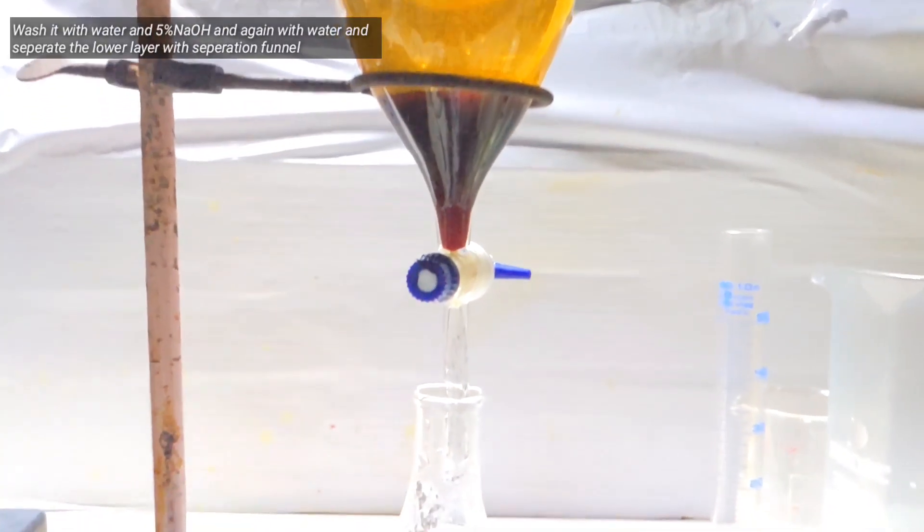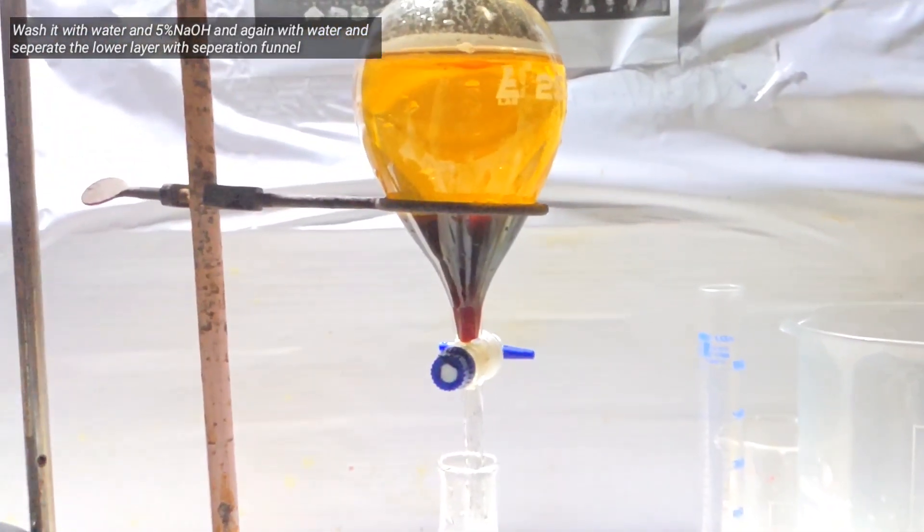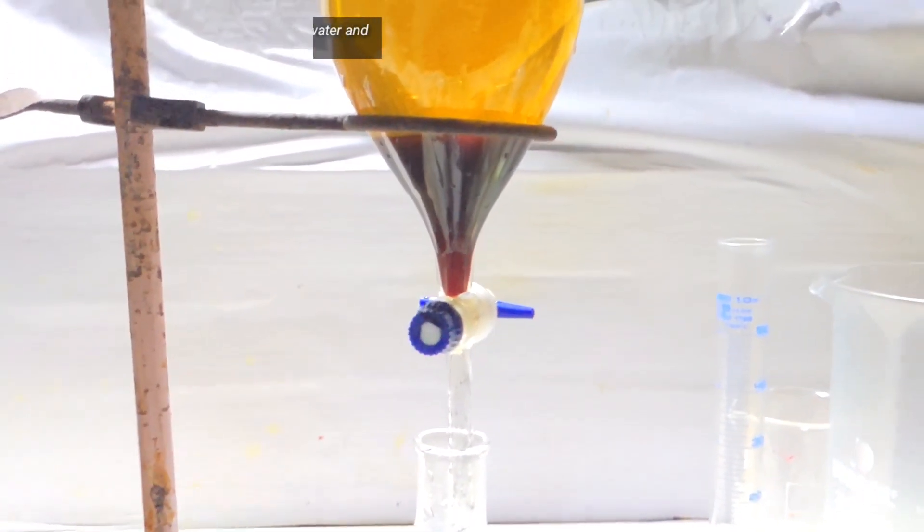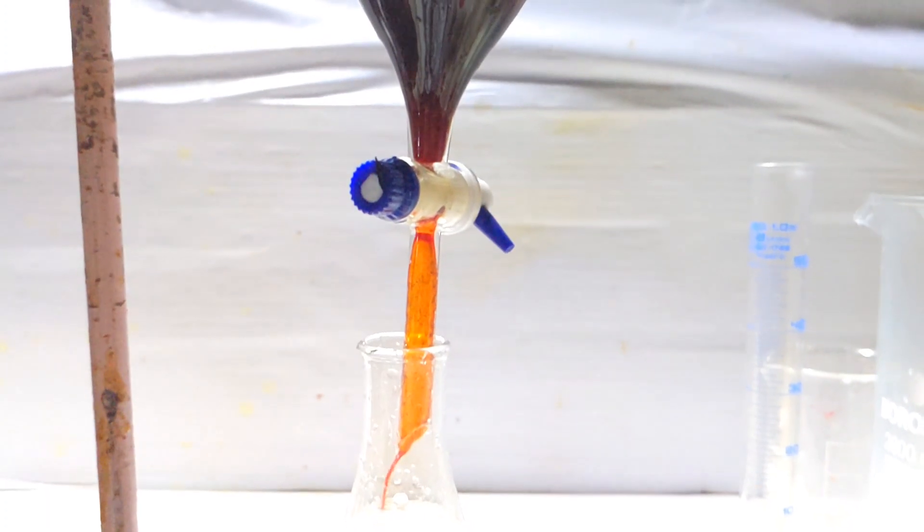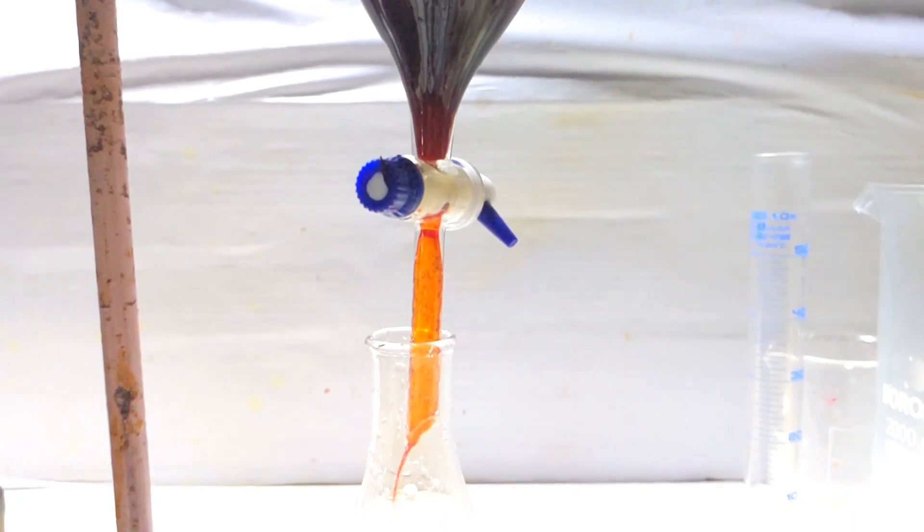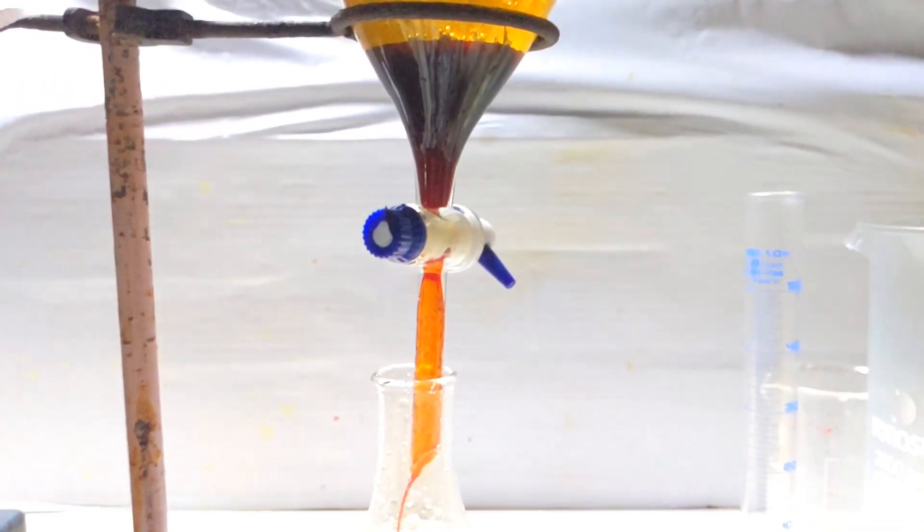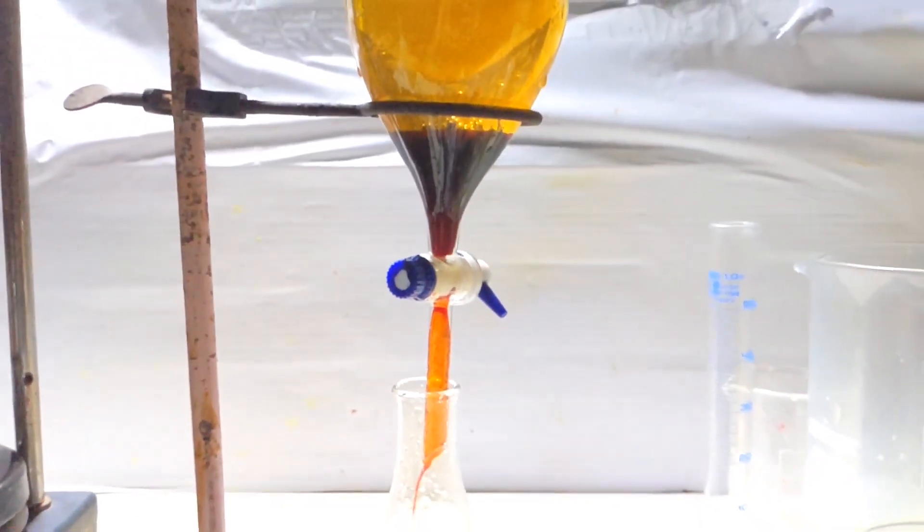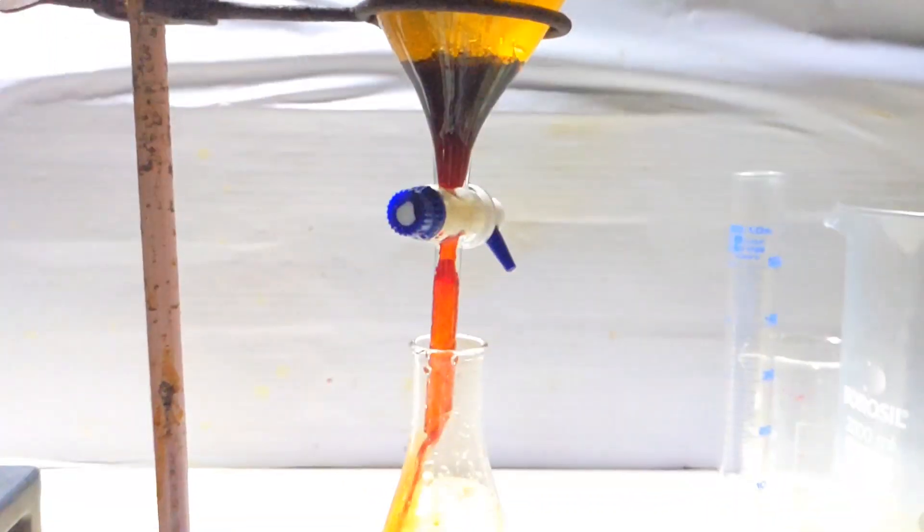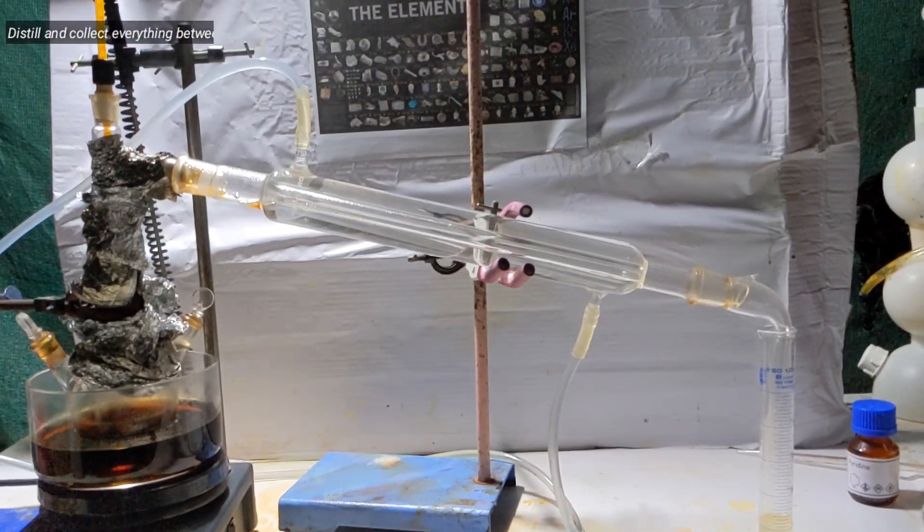After about 45 minutes, we pour the dark solution into around 200 ml of distilled water taken in a separatory funnel and shake and vent until all the unreacted excess bromine is removed. The crude bromobenzene settles to the bottom and is drained into a small 100 ml Erlenmeyer flask. This washing is repeated 2-3 times with distilled water and 5% sodium hydroxide solution.